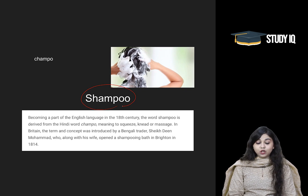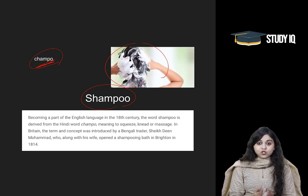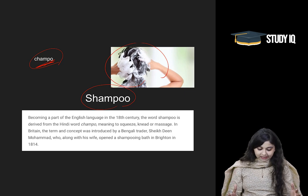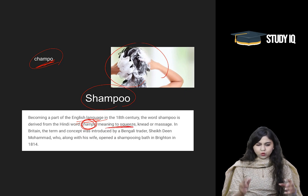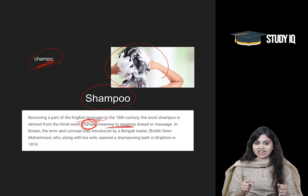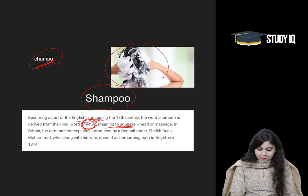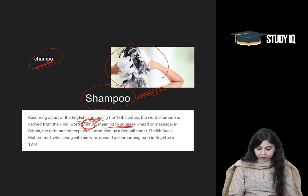'Shampoo' is also a word derived from Hindi — it comes from the Hindi word 'champu'. It became part of the English language from the Hindi word champu, which means to squeeze. So, when you are squeezing, kneading, or massaging something — shampoo is also a word that has been taken from the Hindi vocabulary.